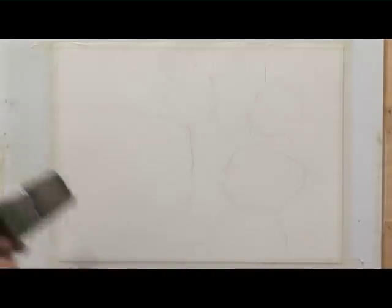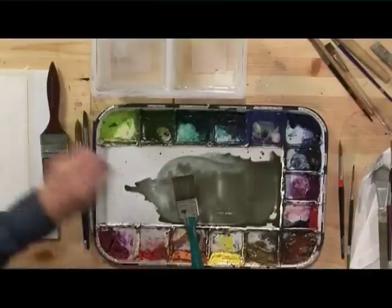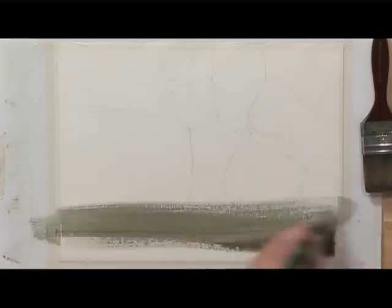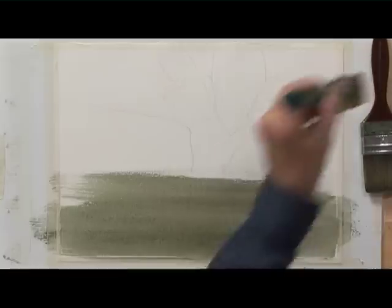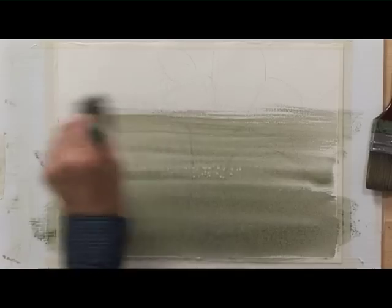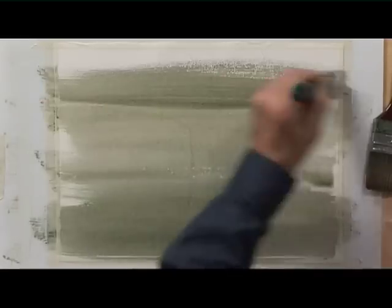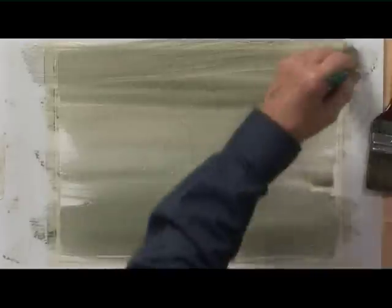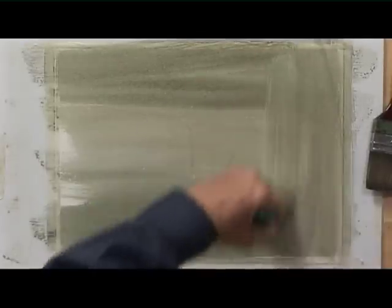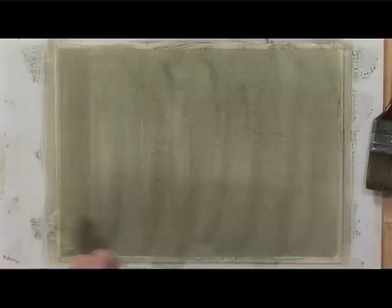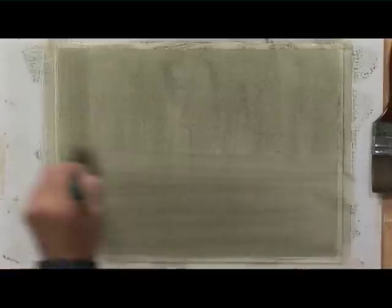I'm going to start by giving my piece of paper a solid wash of the color of the water or the color of the bottom. This is a mixture of cobalt blue, burnt sienna and sap green. I don't want this to be graded in any way so I'm going to go in both directions to make sure that it's fairly well distributed.